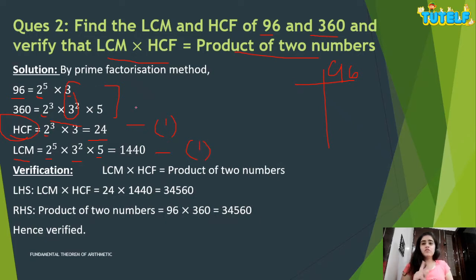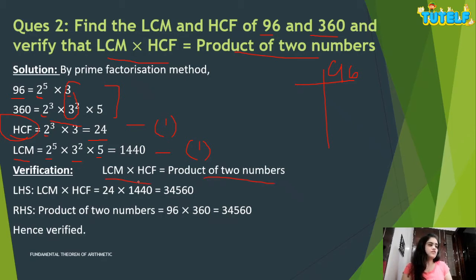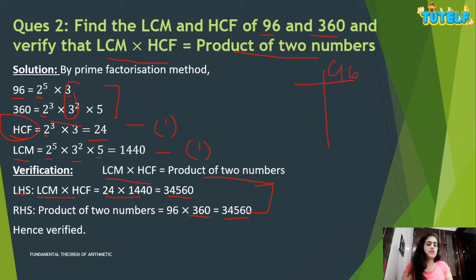For two numbers A and B, LCM(A,B) × HCF(A,B) = A × B. We verify: LHS = 1440 × 24 = 34560. Product of the two numbers: 96 × 360 = 34560. LHS equals RHS, hence verified. You get one more mark for this step.